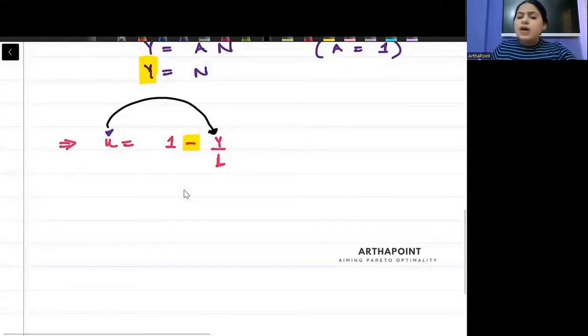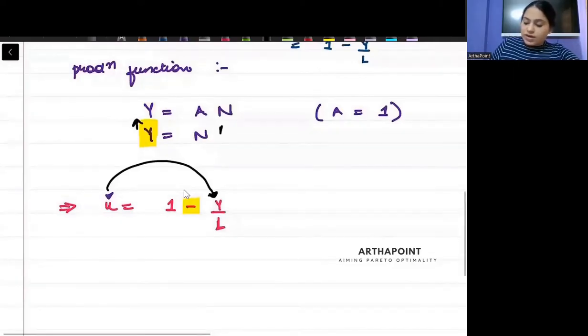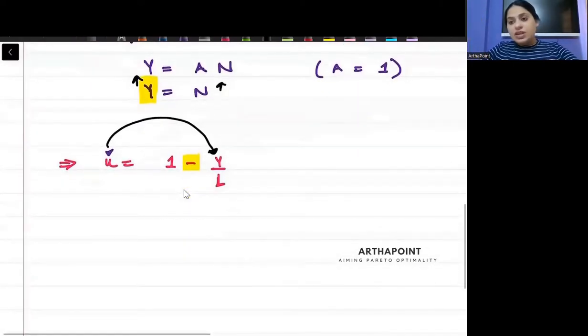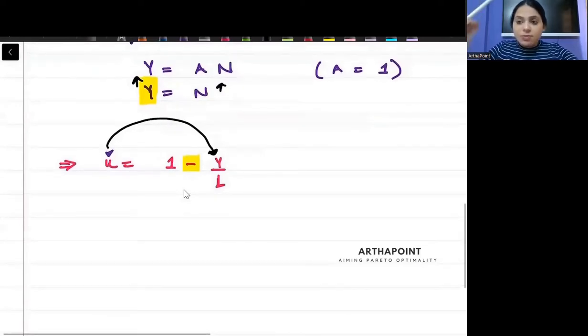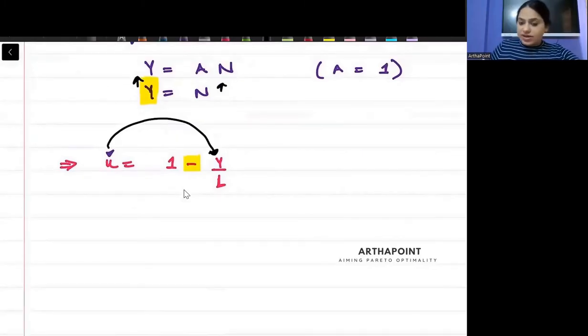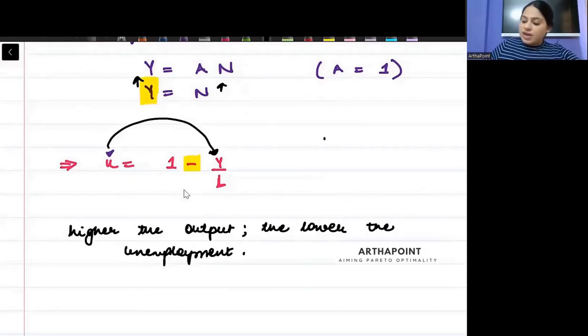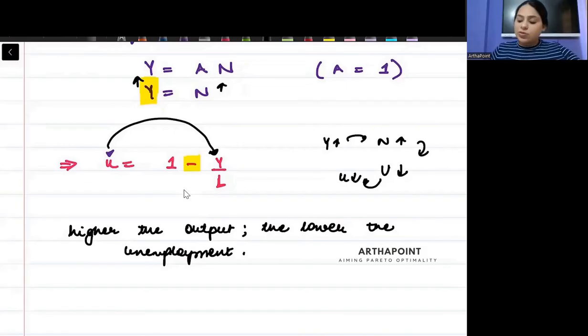What does this mean? Very simple. Beta, if output will increase, if production will increase, you will need more people for it. So when output increases, the number of people I will employ will increase. When the number of people I employ increase, the number of people unemployed will automatically decrease. So can I say that the higher the output, the lower the unemployment rate. If more output is to be produced, when output increases, employment increases. If employment increases, unemployment decreases. So unemployment rate also decreases. So less people will be unemployed.